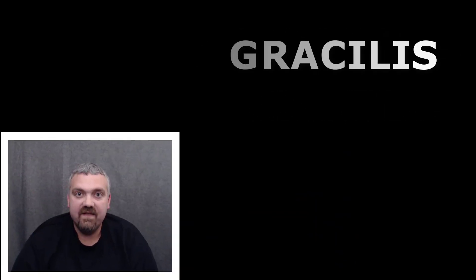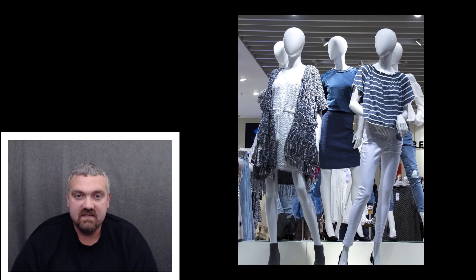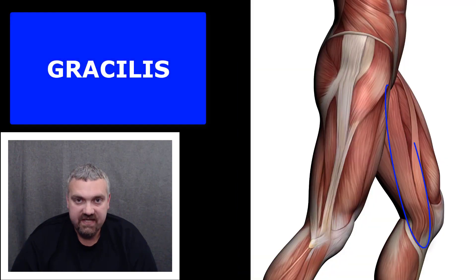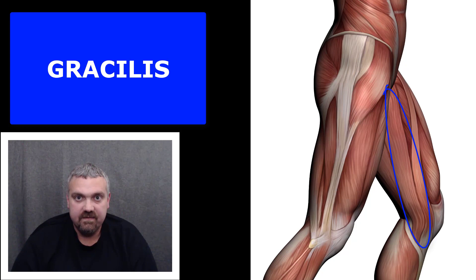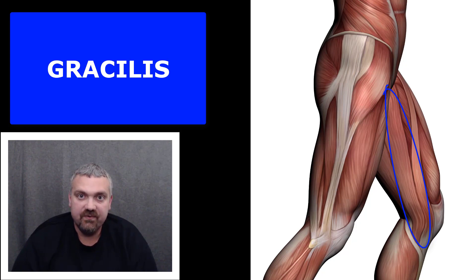Lastly, we have the gracilis. Gracilis means slender. This is a long, skinny, slender muscle that runs on the medial surface — the inside of your thigh. It's actually the medial-most, or innermost, of all the thigh muscles.